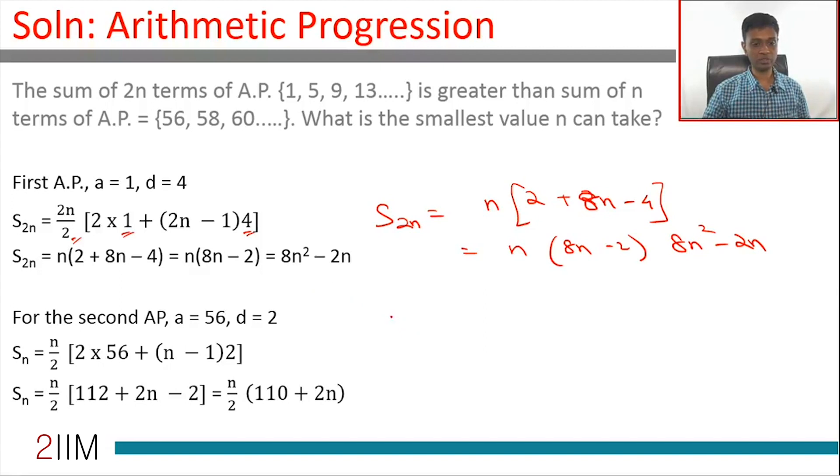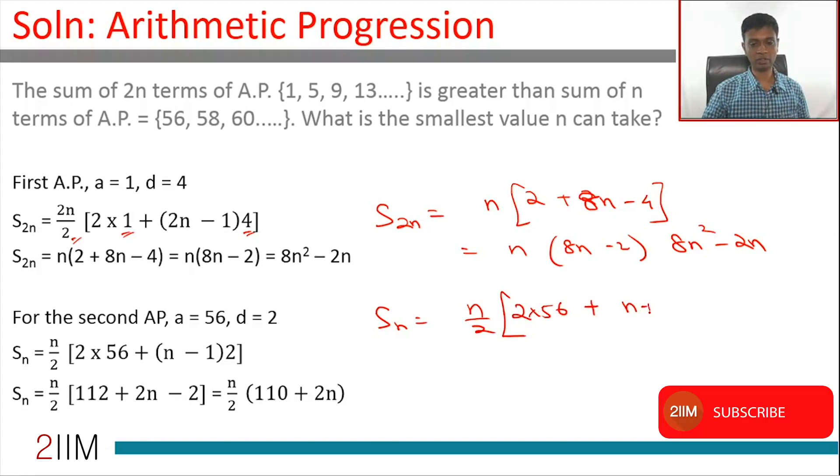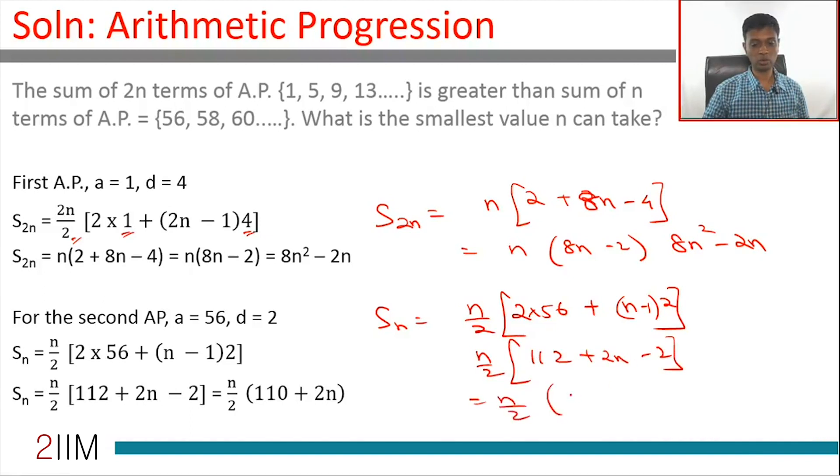Second sequence sum up to n terms of the second sequence is n by 2 into 2 times 56, 2a plus n minus 1 into 2. So, this is n by 2 into 112 plus 2n minus 2 or this is n by 2 into 110 plus 2n.